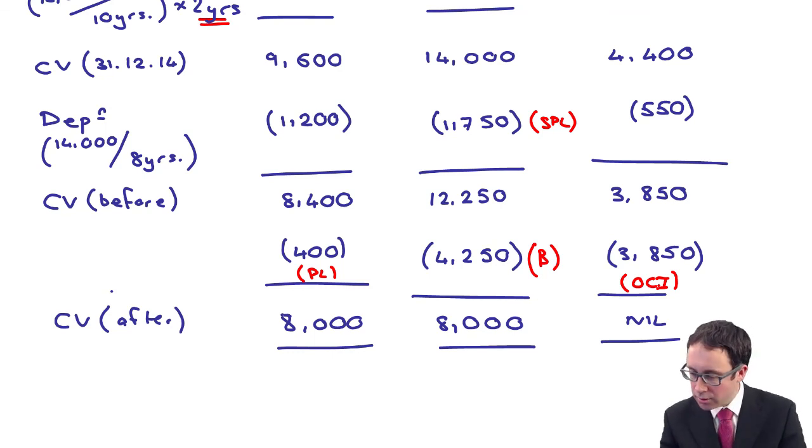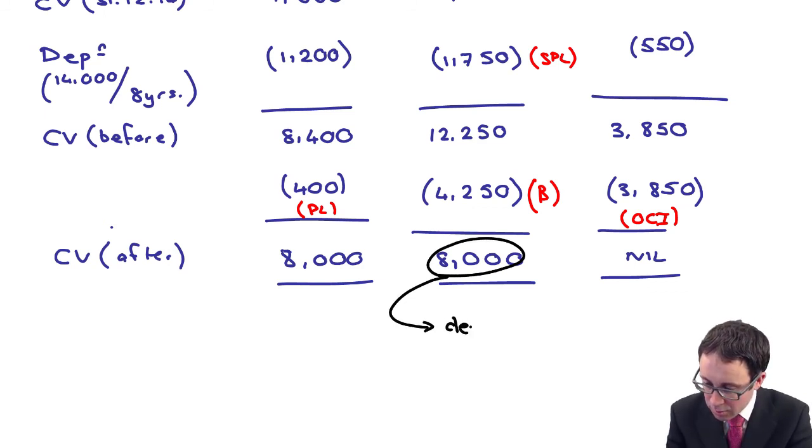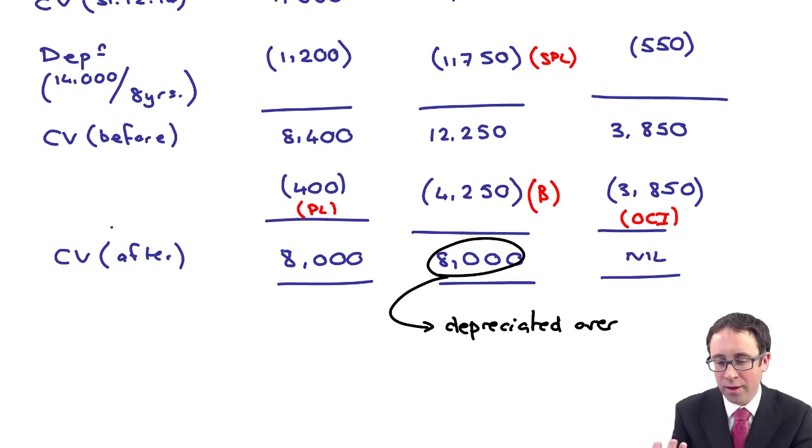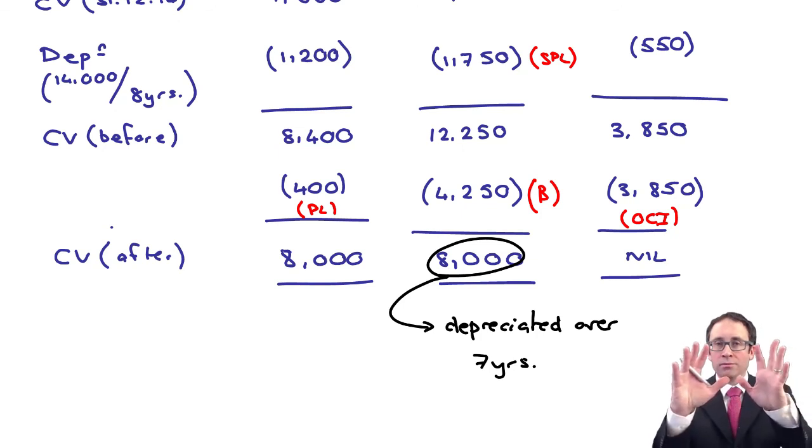Just note, not part of the question, we've answered the question. Just note now that this amount, the 8,000 in subsequent years will now be depreciated over the seven years that are left. You're still taking the revalued amounts. It's been revalued downwards, doesn't matter. You still take that revalued amount even though it's a downward revaluation and depreciate it over the remaining useful life. Here that's now seven years. You can calculate it if you want, but you don't need to feed it into the answer because it was looking at December 2015.